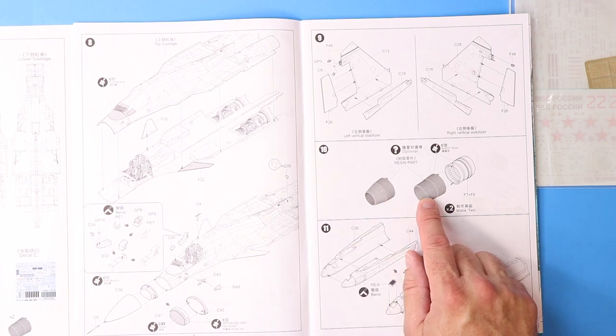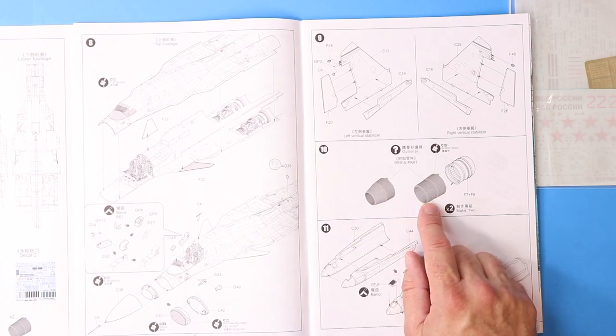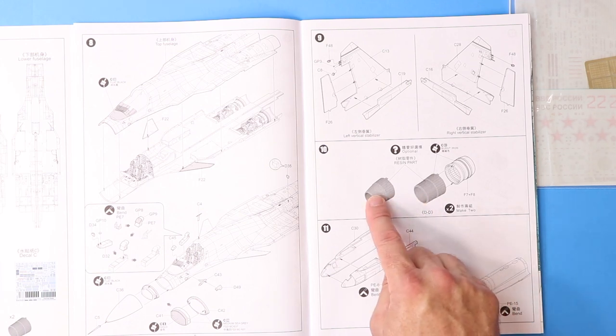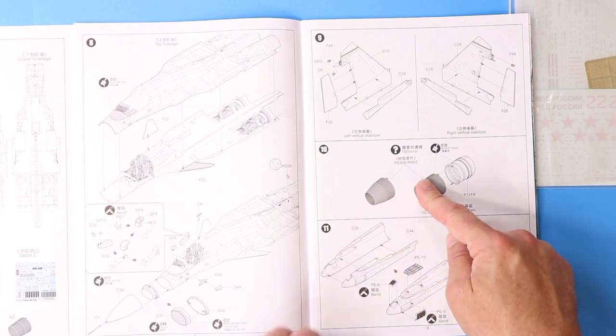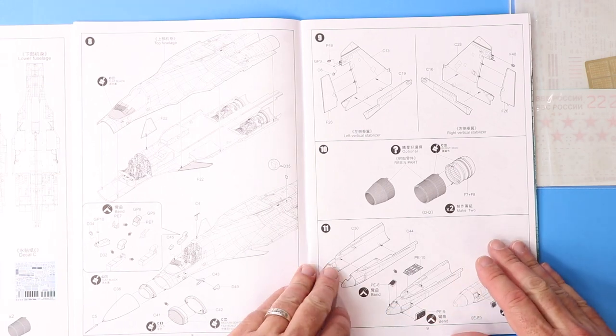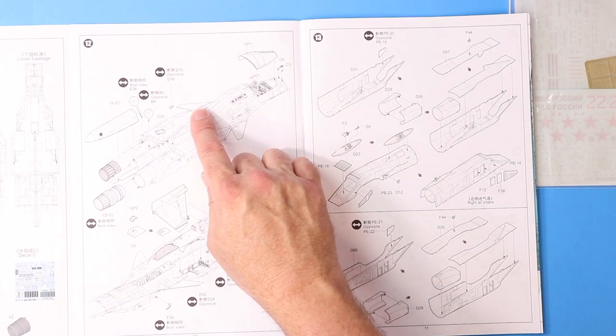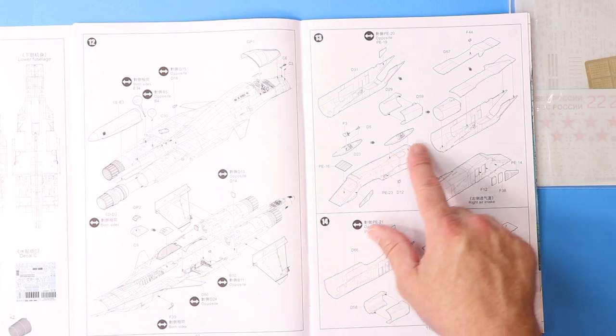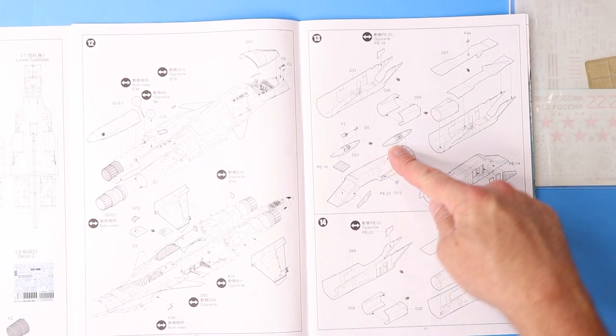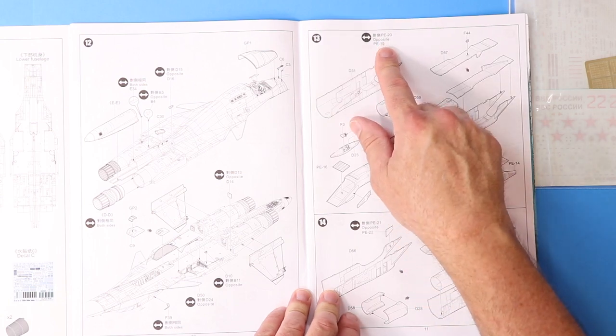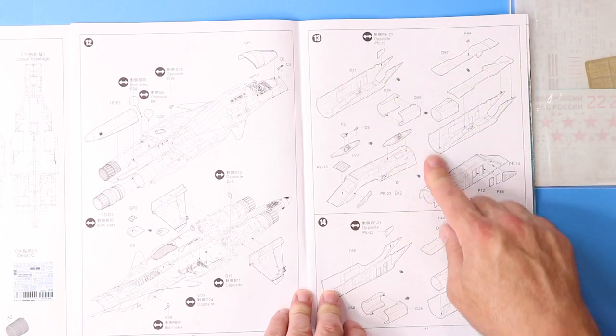Now, here, this has got us putting our resin pieces in, and make two, resin part optional, but it doesn't tell us what the option is. We know it's closed, we know it's open, but is SU-34 static open or static closed? Make sure you check your references. Moving down here, we have some photo etch, it looks like it's going to be going in. Again, this is our tail boom, so that's going to be really interesting. Finishing up the top of the fuselage up here, just more fuselage work, getting it ready, intakes, putting our intakes together over here, and intakes down here. Looks like there's some photo etch going in certain places here. Here's another one of those PE opposite, PE-20, PE-19, pay close attention.